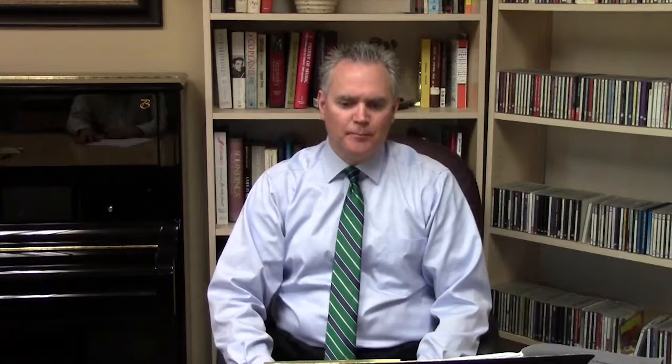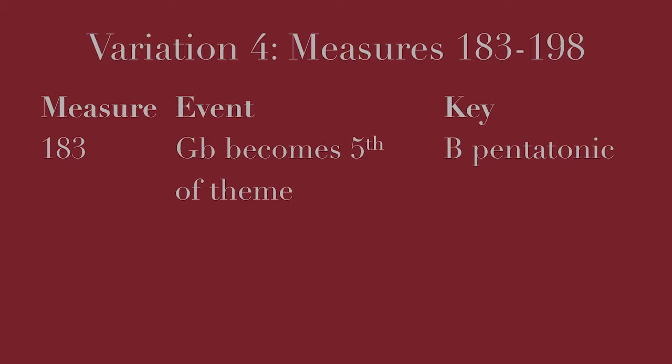Variation 4, the 3-2 sostenuto, begins in the key of B pentatonic with a G-flat pedal in the timpani throughout the variation. This variation ends with an F7 chord which leads into Variation 5 to a B-flat pentatonic.